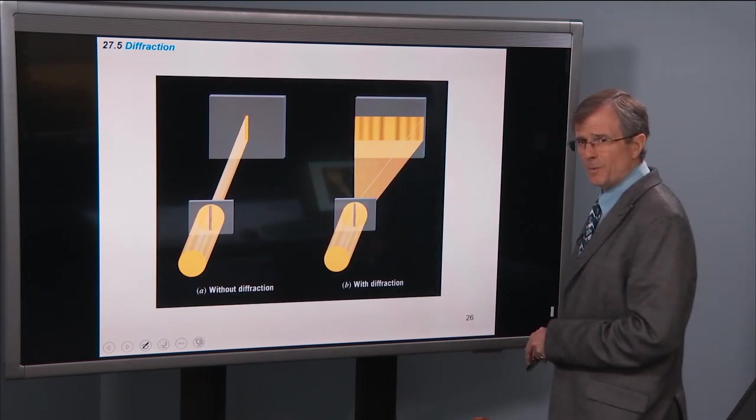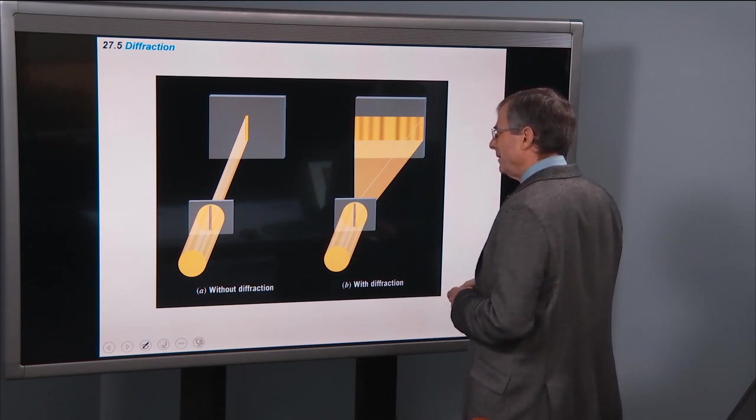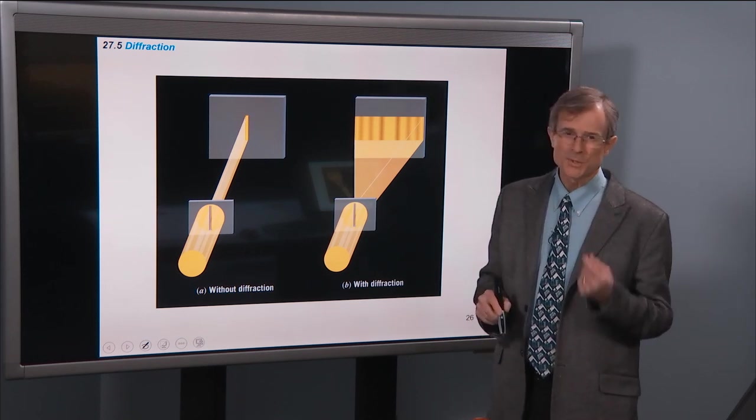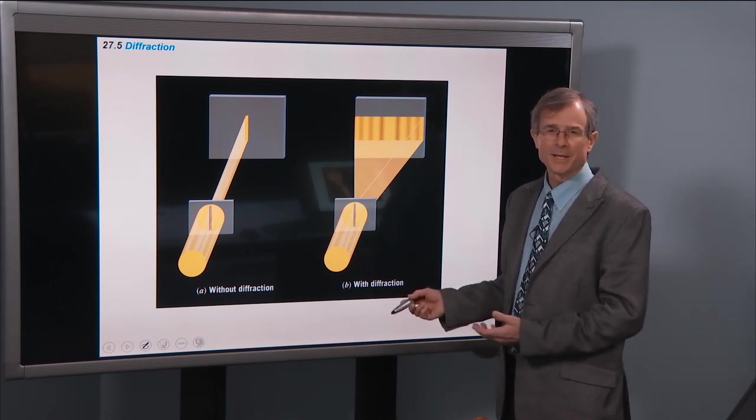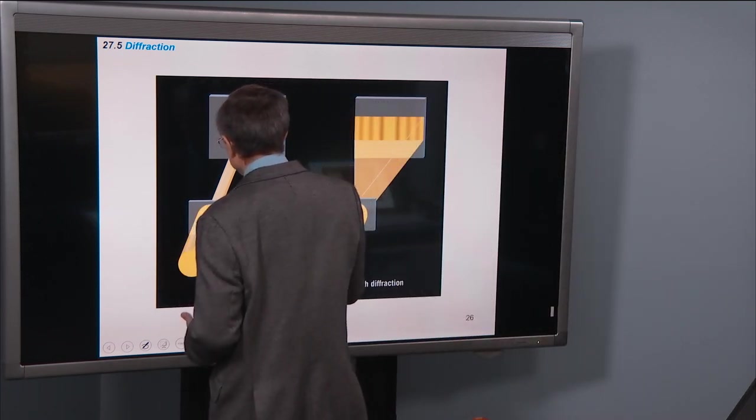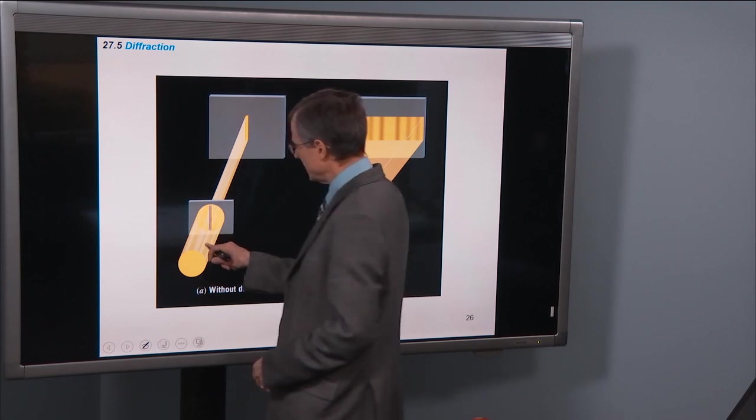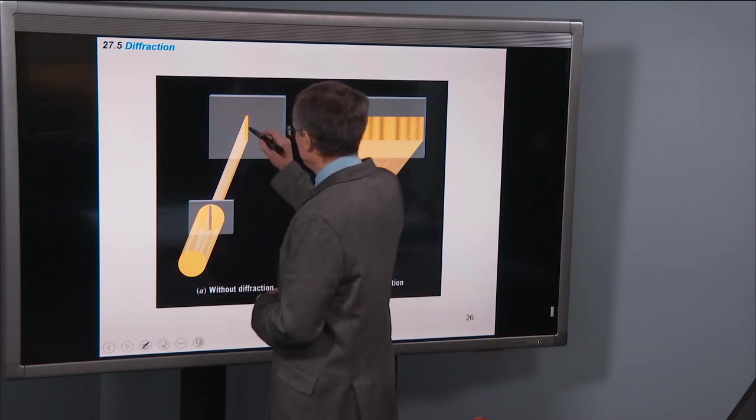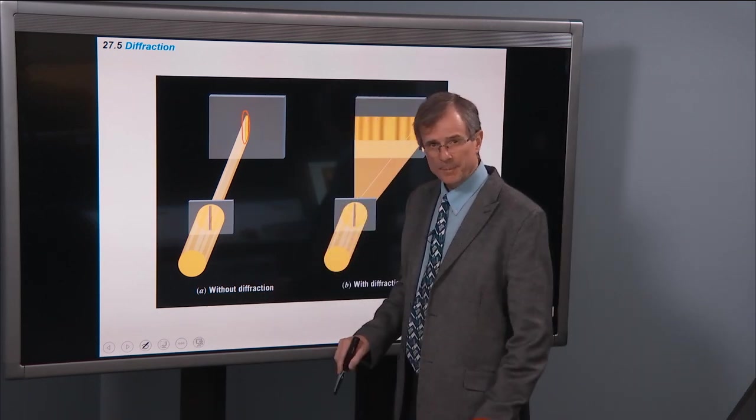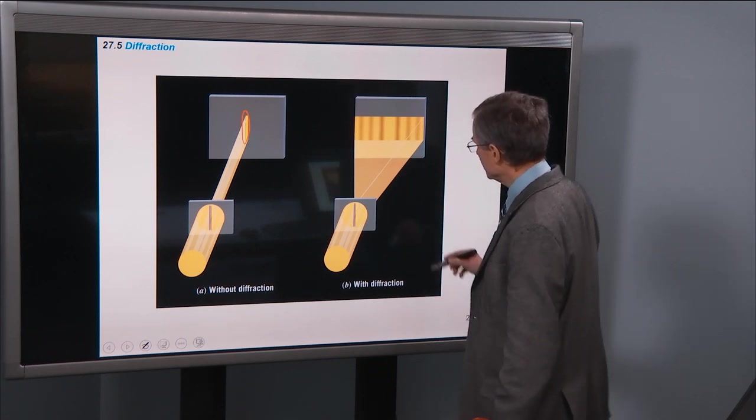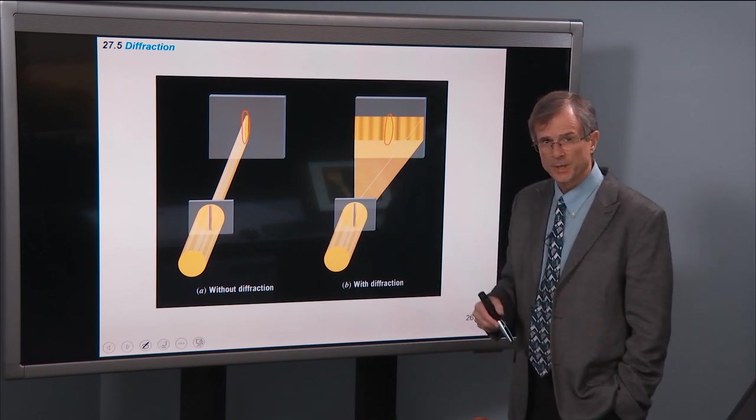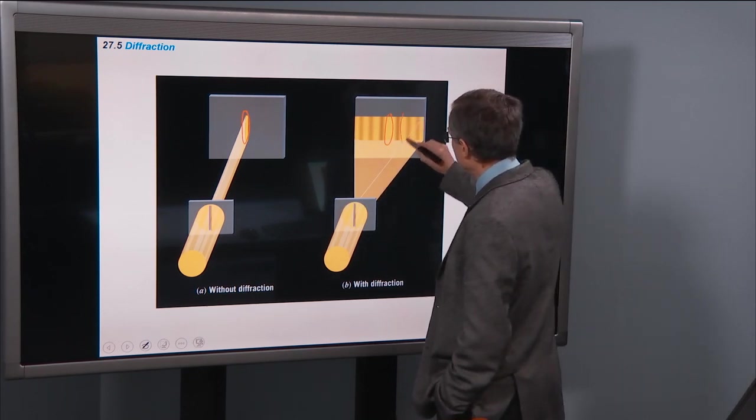All right, so the curious thing about diffraction is that with only a single slit, you get something that looks like a two slit interference pattern. So if you've got no diffraction, if you're just thinking about a shotgun and you shoot it through this, then all of the impacts are going to be along a line. That's not what happens here. We've got a wave. And because of this diffraction, you definitely have a central bright fringe, but then you see other bright fringes to the side.